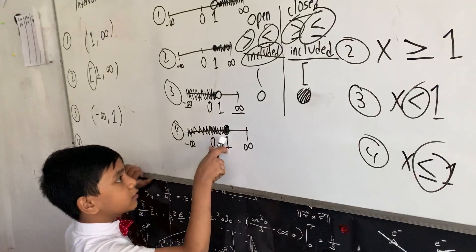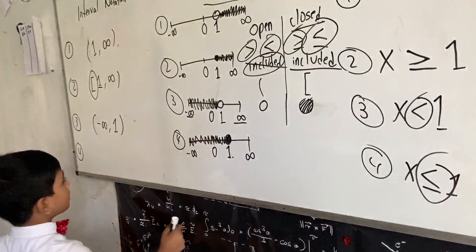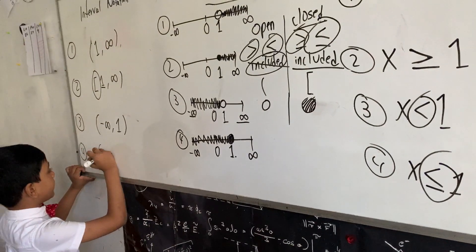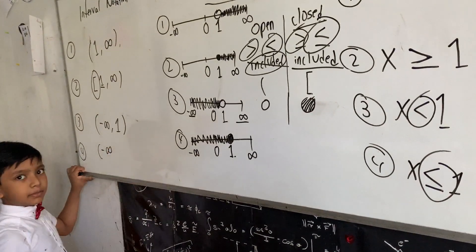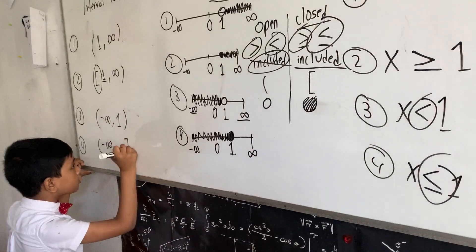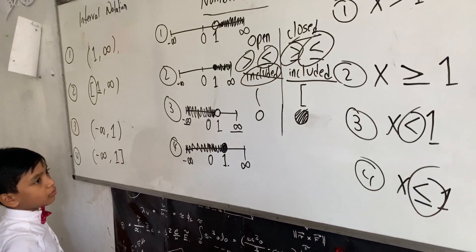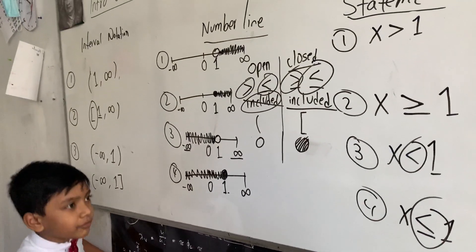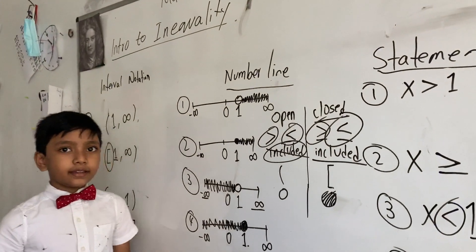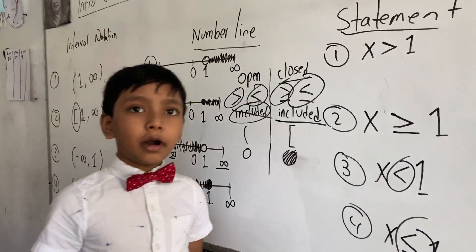As you can see, it includes the 1 in there as well. So we know that it ranges from negative infinity, which must be an open circle, but 1 is a closed circle. So we put a bracket there, and then we put a 1. So thank you everybody for watching, and I'll see you next. This video was made possible by Brilliant.